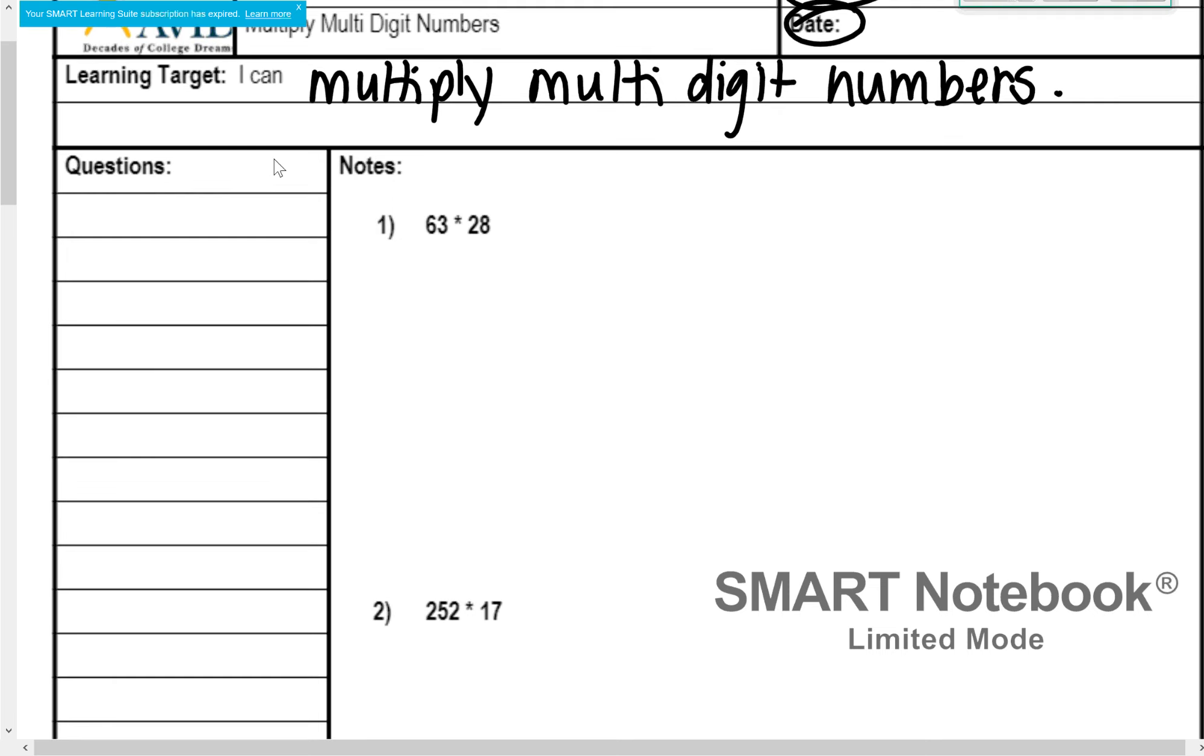Our first example is going to be 63 times 28. Now you're going to notice that we're using that little star symbol. In math, from now on, we don't really like to use that x, because we are going to be solving equations later in the year, and this x is going to be very confusing. Okay, so you could do 63 dot 28, 63 star 28, or 63 parenthesis 28. Those are different ways that we can show multiplication. For this section, we're just going to use a star.